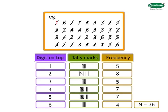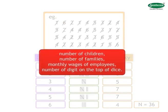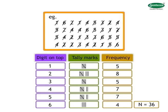The lowest score is 1. The highest score is 6. All other scores are between 1 and 6. Draw 3 columns. First column should contain digits which occur in the raw data, i.e. scores. It can be number of children, number of families, monthly wages of employees, number of digits on the top of dice as given in the example, etc. In the second column, draw the appropriate tally marks.